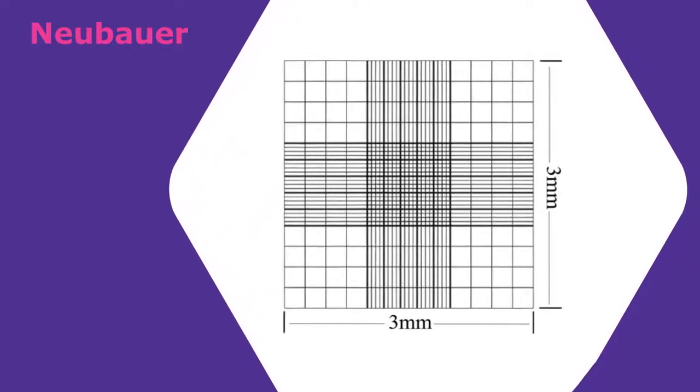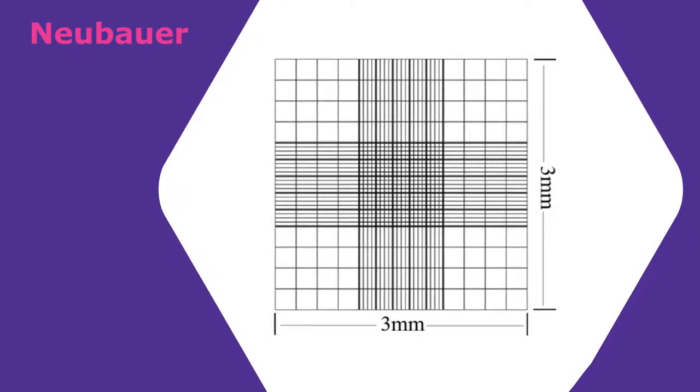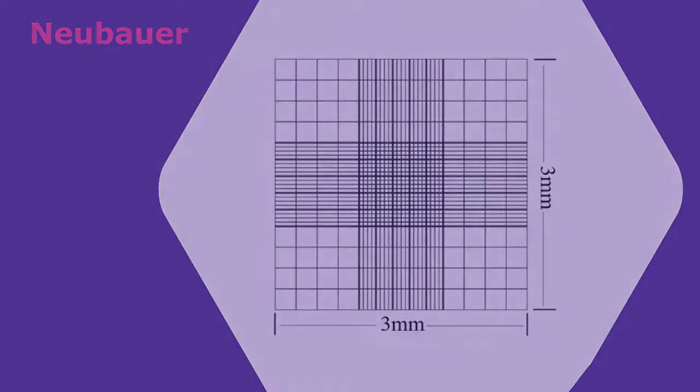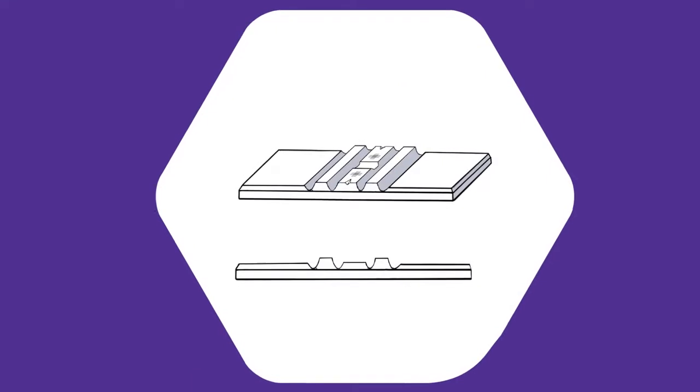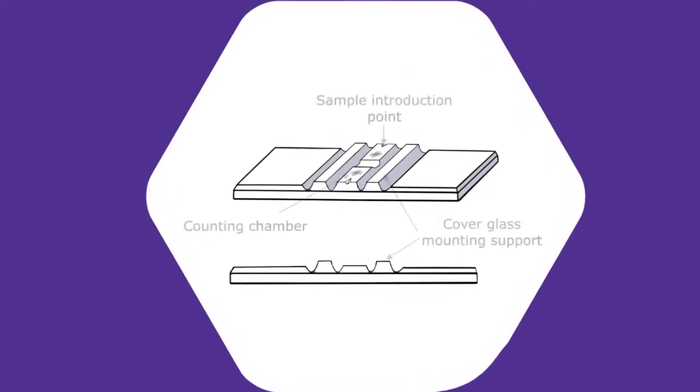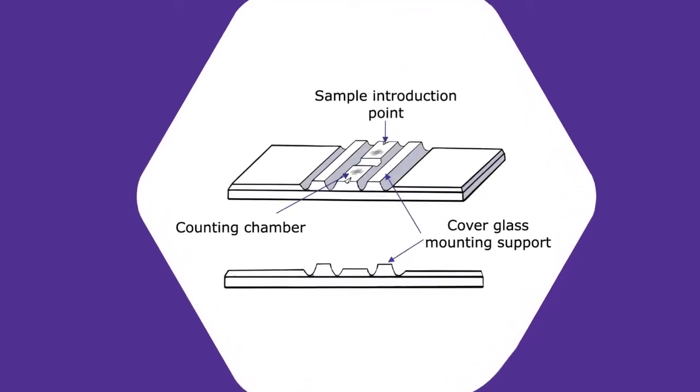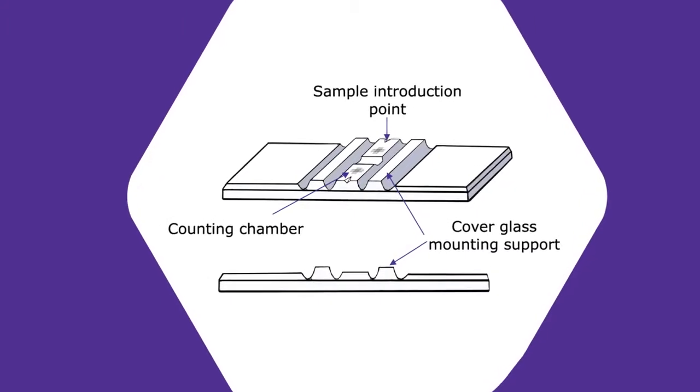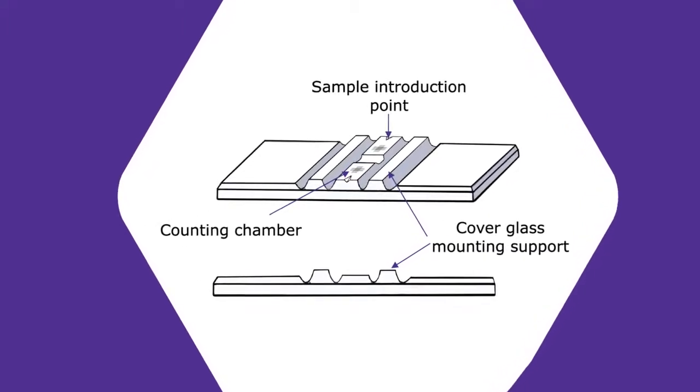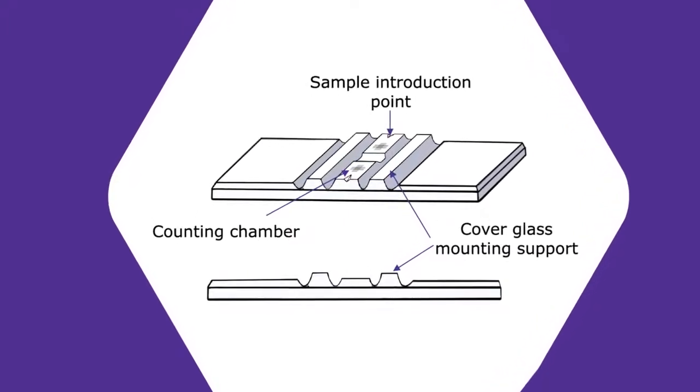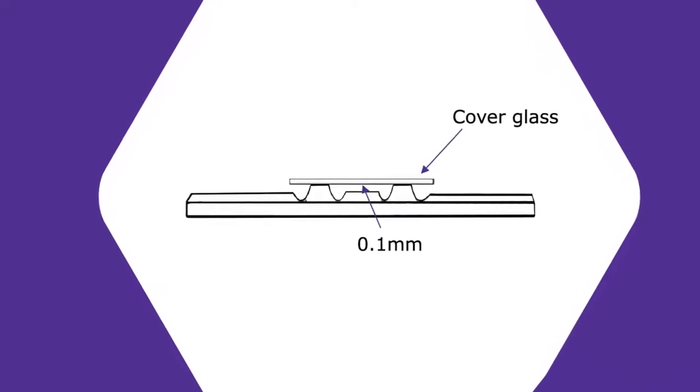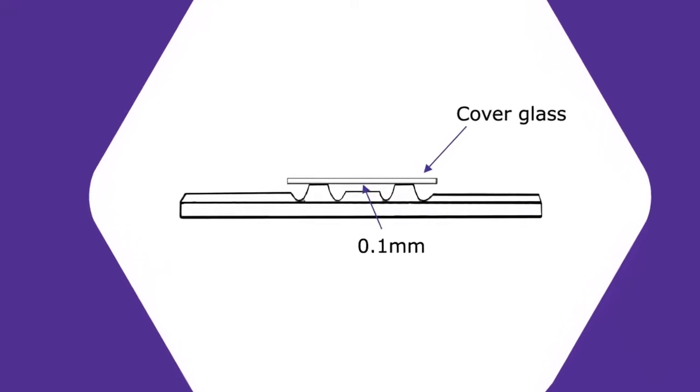We will focus on Neubauer which is most commonly used for mammalian cell counting. As you can see in this image, the heavy glass cover slip used for the hemocytometer creates ceiling with height between the counting chamber and the bottom of the cover slip. This height will come out to be exactly 0.1 millimeter.